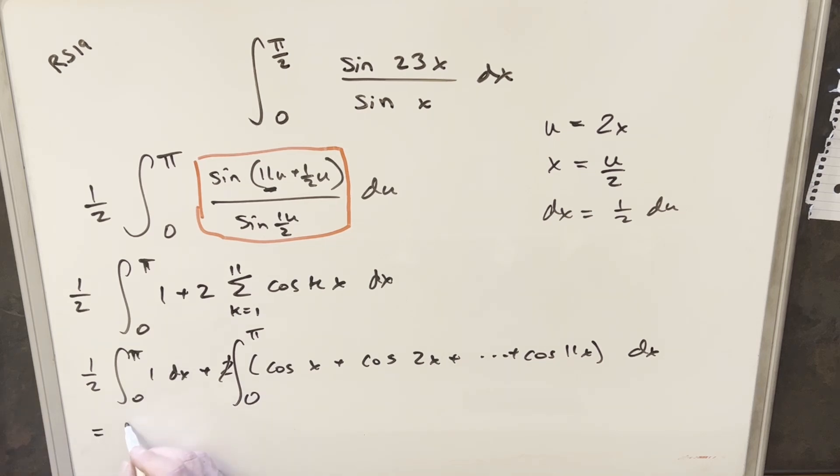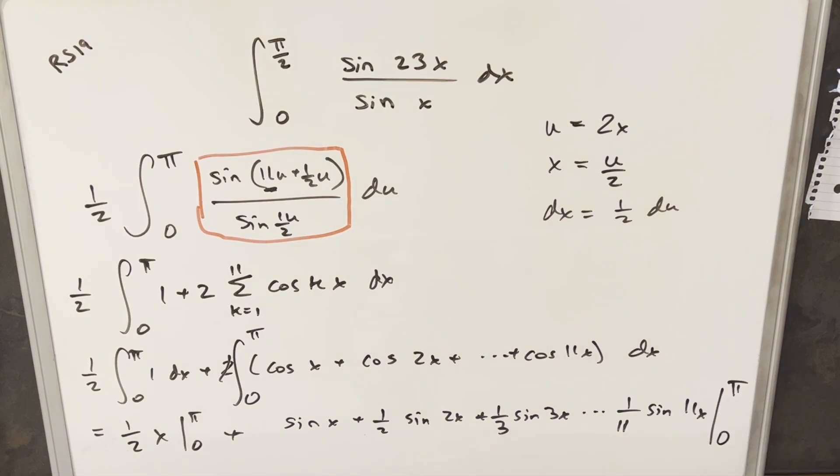So just integrating this first thing, we're just going to have a half x evaluated from zero to pi. And then integrating all these, we're going to have sine x plus a half sine 2x plus a third sine 3x all the way to 1 over 11 sine of 11x. But now let's just evaluate this, and then we can finish it off.